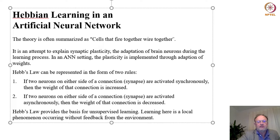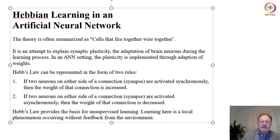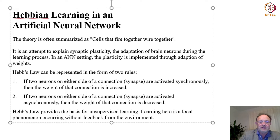What is Hebbian learning in an artificial neural network? The theory is often summarized as 'cells that fire together, wire together.' It is an attempt to explain synaptic plasticity — the adaptation of brain neurons during the learning process. In an ANN setting, plasticity implements the adaptation of weights. Hebb's law can be represented as two rules: if two neurons on either side of a connection are activated synchronously, then the weight of that connection is increased. Hebb's law provides the basis for unsupervised learning, where learning is a local phenomenon occurring without any feedback from the environment.